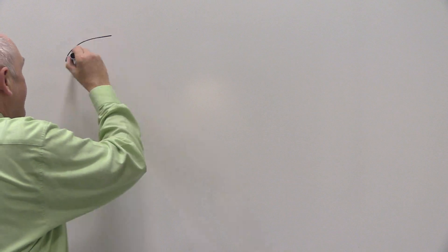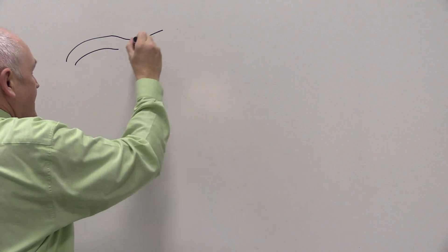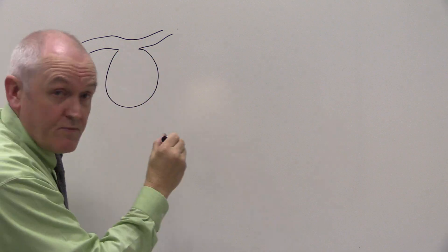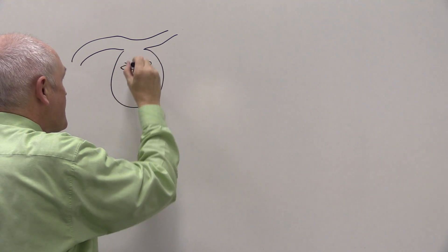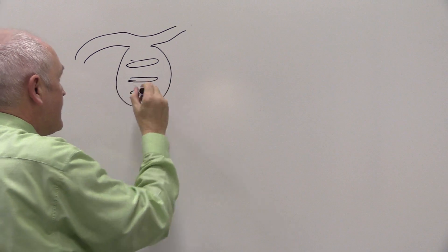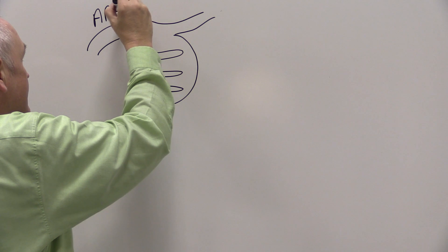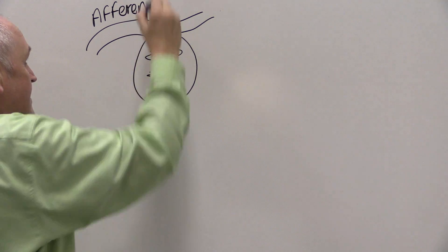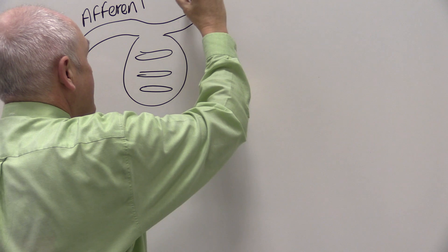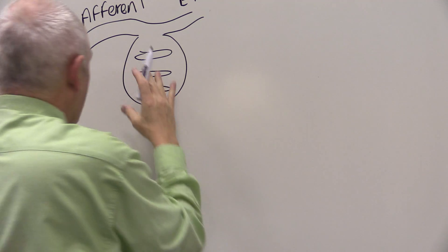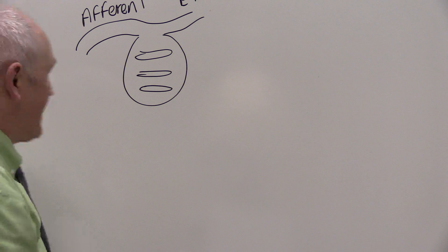Here we have the afferent arteriole and the efferent arteriole, and the glomerulus, which is the ball of capillaries. So, afferent arteriole there, efferent arteriole over here, and the ball of capillaries, which is the glomerulus.